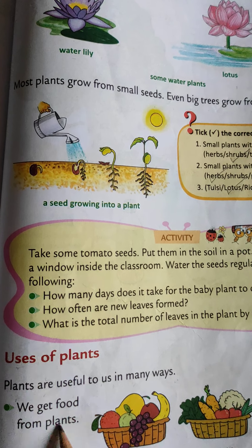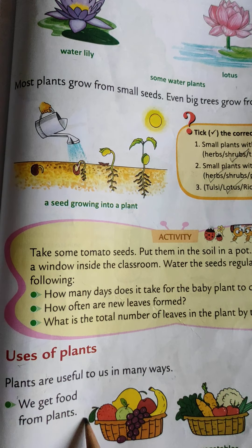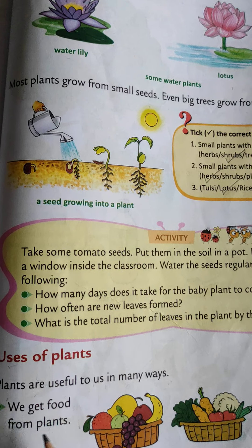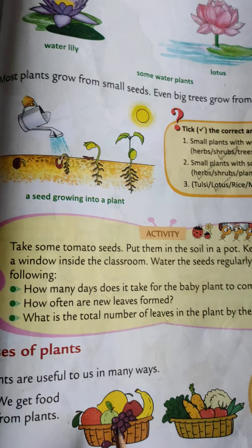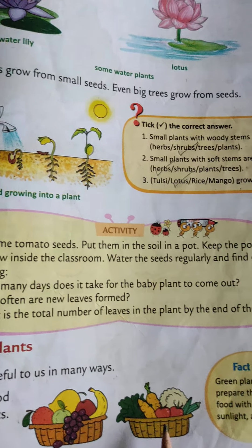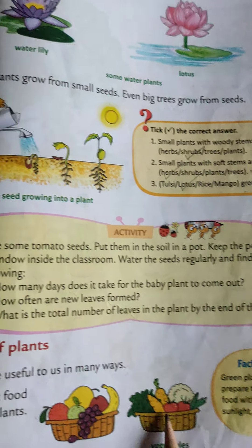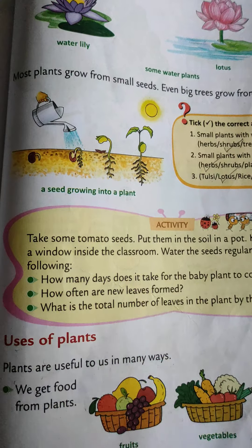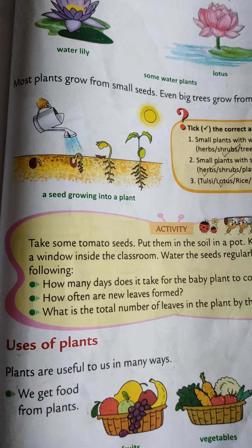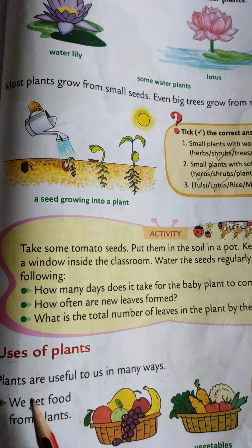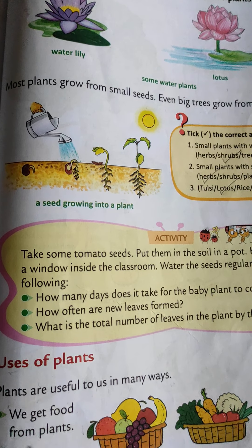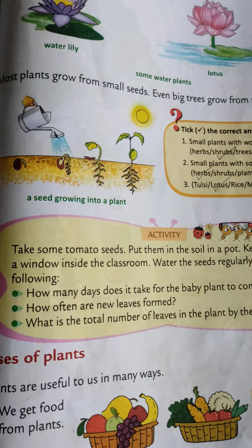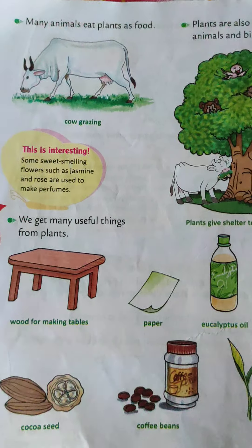We get food from plants. We get food like fruits and vegetables from plants. Like animals, plants are also very useful to us and we get food from them.